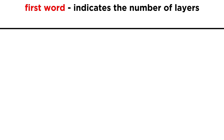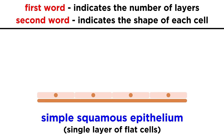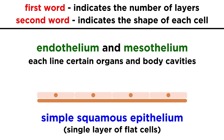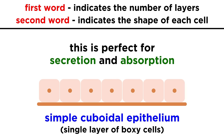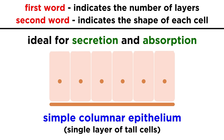Putting these two characteristics together, we will need one word to indicate the number of layers in the epithelium, and another word to indicate the shape of each cell. So for example, we can have a simple squamous epithelium, a single layer of flat cells with disc-shaped nuclei. This looks kind of like a tiled floor, and this structure is ideal when rapid exchange of materials by diffusion is important. Two types of simple squamous epithelia are endothelium and mesothelium, which differ in their location in the body. Next we have simple cuboidal epithelium, a single sheet with boxy cells, perfect for secretion and absorption. Rounding out the simple epithelia, we have simple columnar epithelium, a single layer of very tall cells, also ideal for secretion and absorption, particularly in the context of digestion.